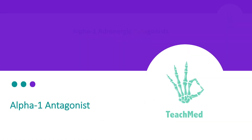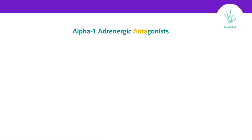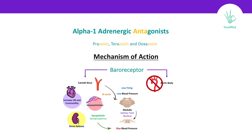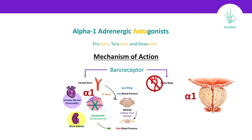Alpha-1 antagonists. Alpha-1 adrenergic antagonists, like prazosin, terazosin, and doxazosin, work on the blood vessels, because alpha-1 receptors are found in blood vessels. If we block them, we get vasodilation, which helps in lowering blood pressure. It's also good to know that alpha-1 is found in smooth muscle, so blocking it causes dilation. Therefore, if someone presents with benign prostatic hyperplasia and hypertension, this medication is actually a good option for them.